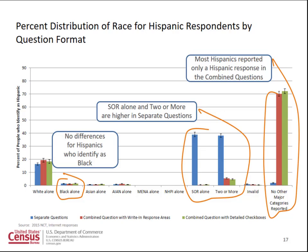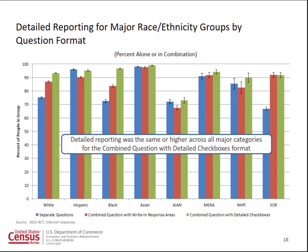If we just look at how Hispanics reported race, looking at the far right-hand corner, the vast majority of Hispanics in the combined question told us they were Hispanic — that's all they did. Seventy percent said, I'm Hispanic, I'm not giving you another race category. The 'some other race' and 'two or more races' categories are higher in the separate questions than in the combined questions. We think that's because Hispanics, when they get to the race question in the separate format, think: I just told you I was Hispanic, so now they write in their Hispanic ethnicity under 'some other race' or say they're white but write in Cuban. Finally, we see that there was no difference for Hispanics who identified as Black, which was a concern from the AQE about Afro-Latinos.